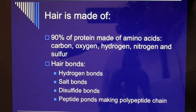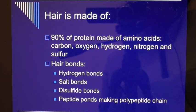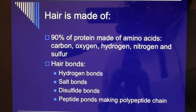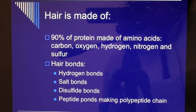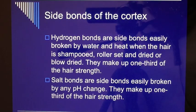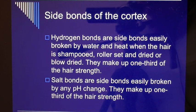Hair is made of 90% protein, composed of amino acids: carbon, oxygen, hydrogen, nitrogen, and sulfur. Hair bonds include hydrogen bonds, salt bonds, disulfide bonds, and peptide bonds, which make up the polypeptide chain. These are the side bonds of the cortex.